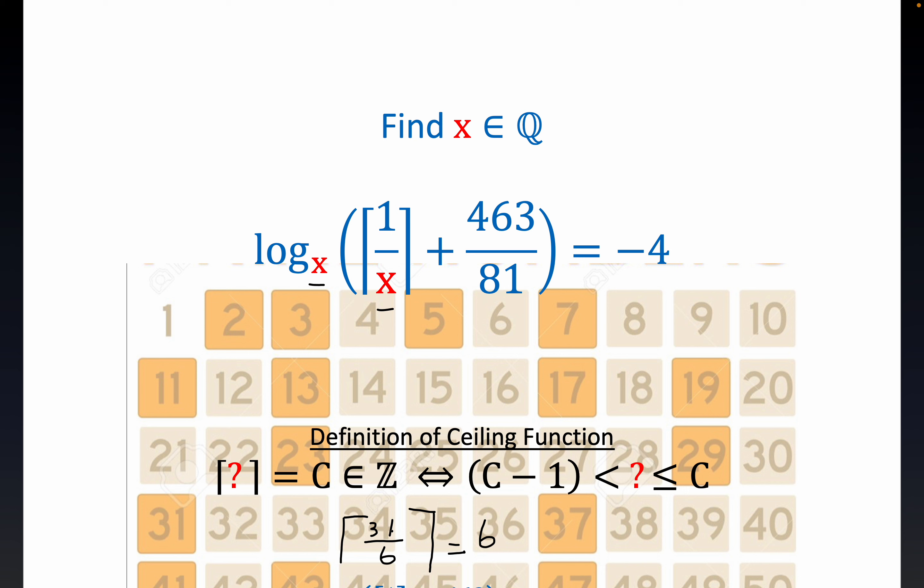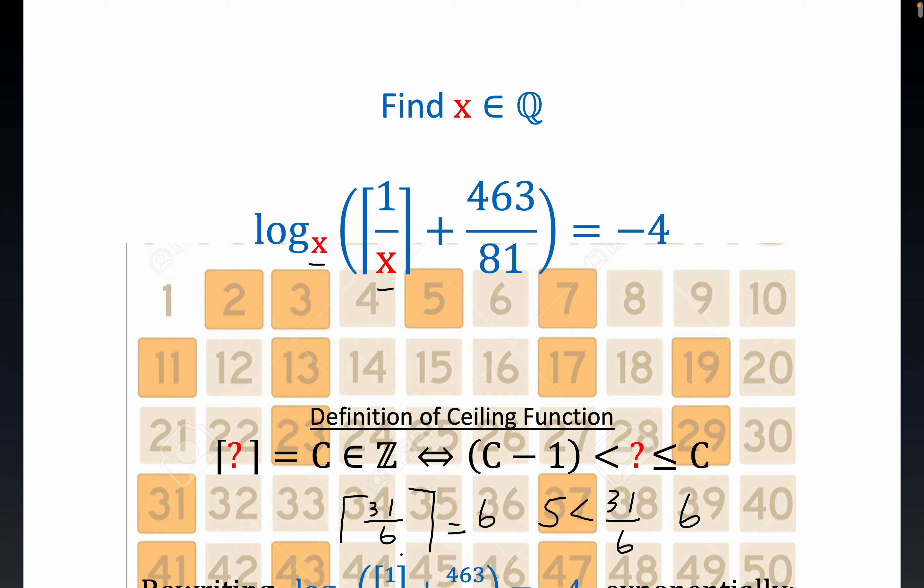Again, 31 over 6 is between 5 and 6, because 5 is the lower bound for 31 over 6, the integer lower bound that we should say perhaps. And then this is 6 right here. So it's the number, it's called the ceiling function because it's the least integer that's greater than the input argument. Now let's move along and get into the problem.